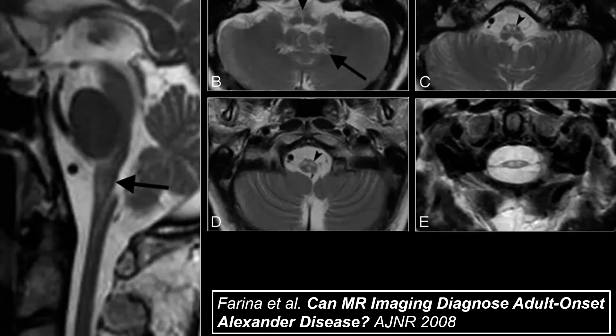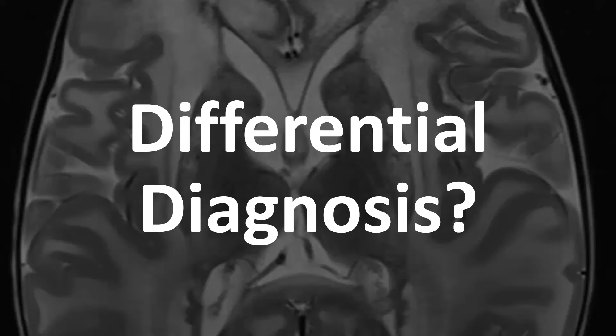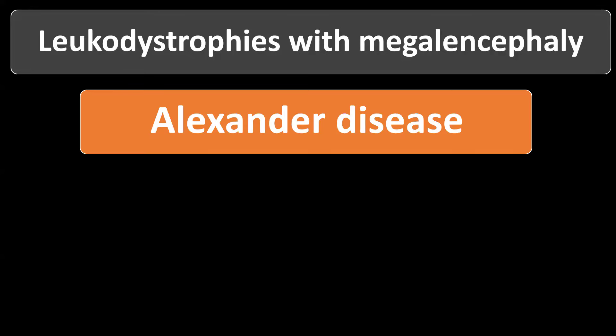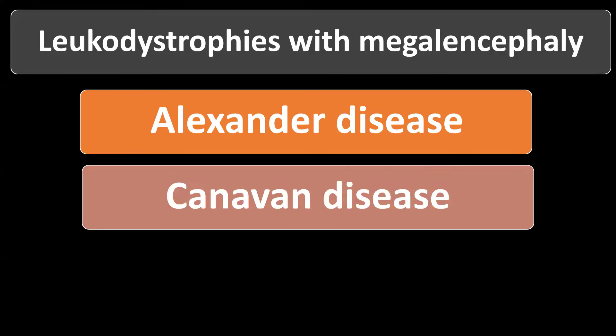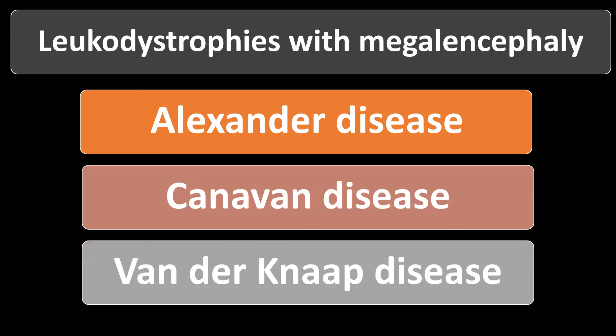What's the main differential diagnosis radiologically? It will be with other inborn errors of metabolism in which patients present with macrocephaly in the infantile form. So what are leukodystrophies with megalencephaly or macrocephaly? We have Alexander disease, but also Canavan disease and van der Knaap disease. Let's start with Canavan disease.